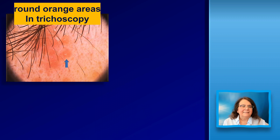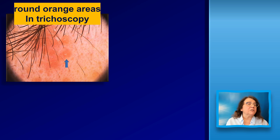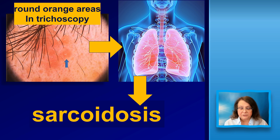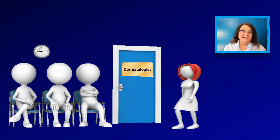One more patient: someone who came in with some red lesions which would not look very suspicious. We performed trichoscopy and saw multiple round orange areas. This led us to the suspicion of sarcoidosis. We performed a chest X-ray, and yes, the diagnosis in this patient was sarcoidosis. She was referred to a pulmonologist for further investigation.